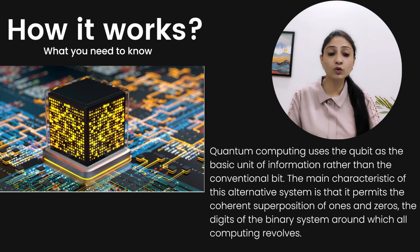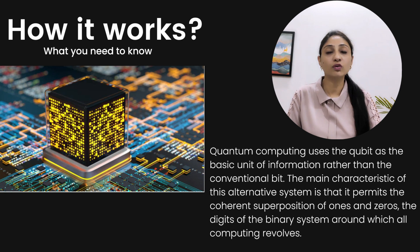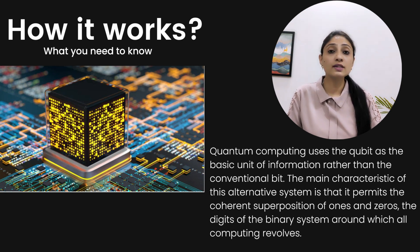Quantum computing uses the qubit as the basic unit of information rather than the conventional bit. The main characteristic of this system is that it permits the coherent superposition of ones and zeros — the digits of the binary system around which all computing revolves. In quantum computing, qubits are used instead of conventional bits, which makes computation much faster than classical computers.